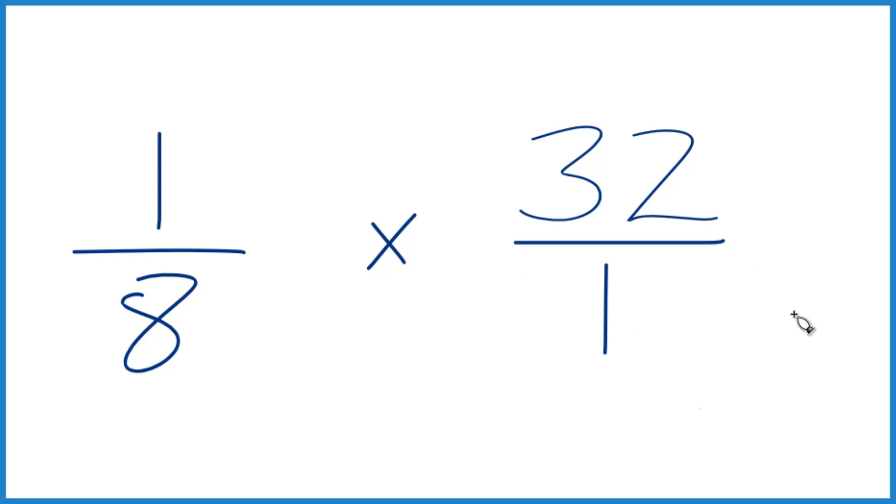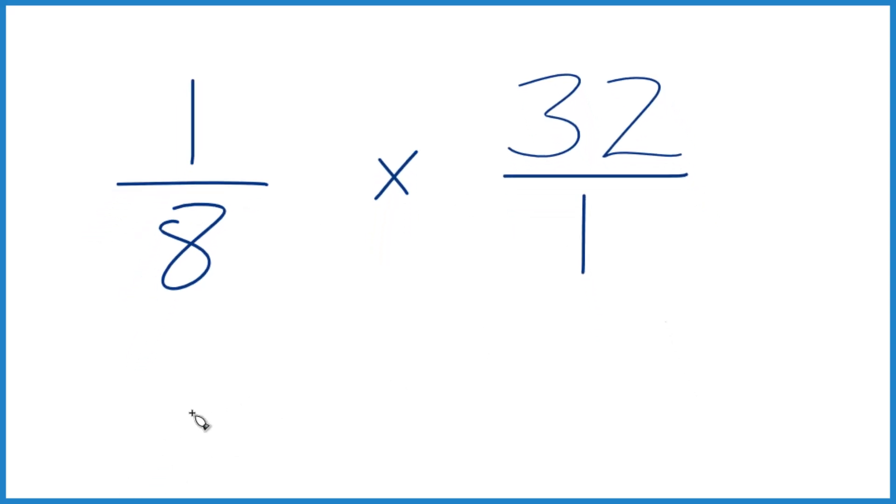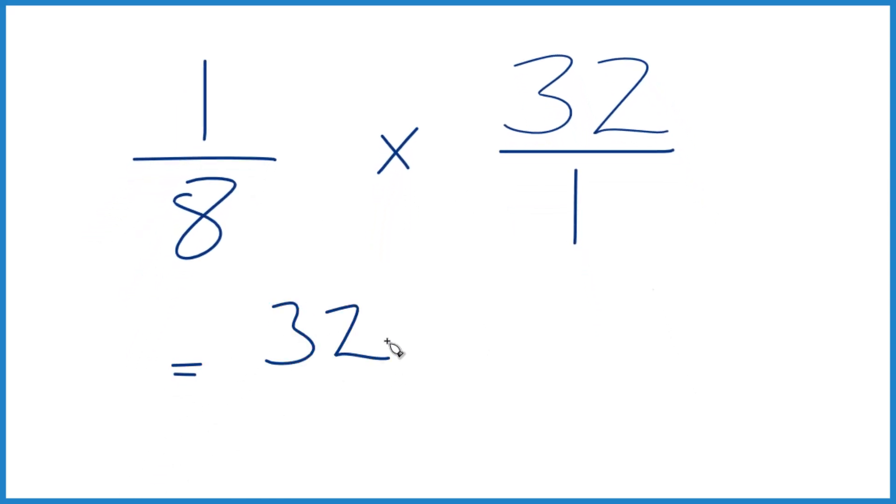With fractions, when I multiply, I multiply the numerators: 1 times 32 equals 32. 8 times 1 equals 8. And 8 goes into 32 four times; 4 times 8 is 32. So one-eighth of the number 32 is 4.